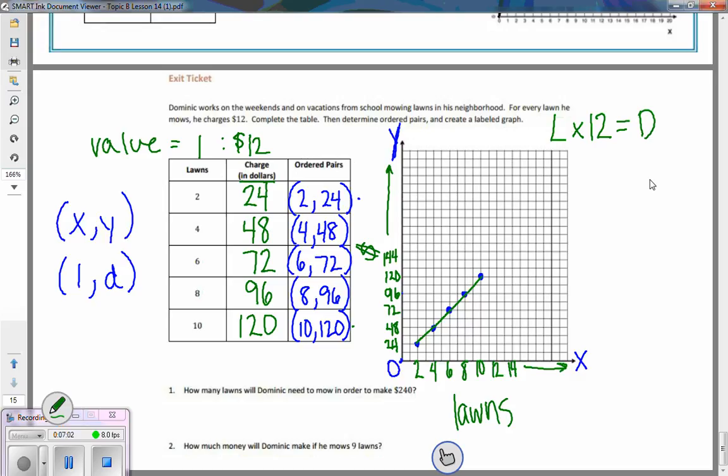I've also seen some people set up equivalent ratios. What I've seen is I saw some people said, well, 10 lawns is $120, so if I double 120 I can get my $240, which would mean I would double the 10 and get 20 lawns.